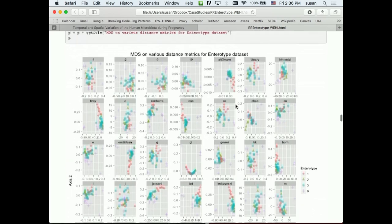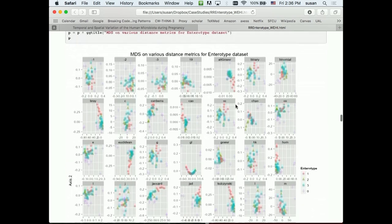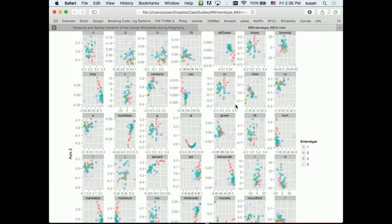And in fact, we chose to loop through all possible distances available to us in R, and we made these clumpings. And actually, if you look at all the plots, you see that they're not always very well separated.